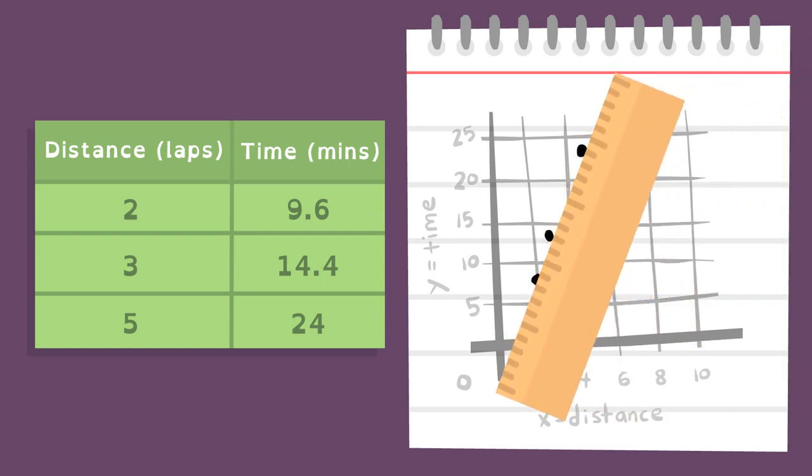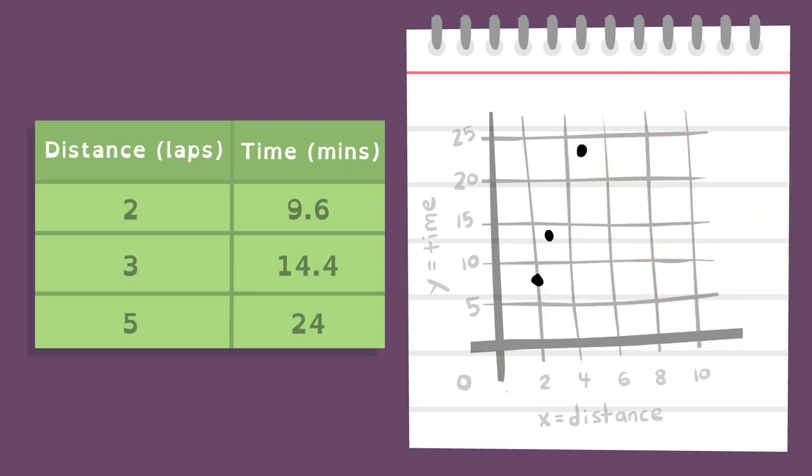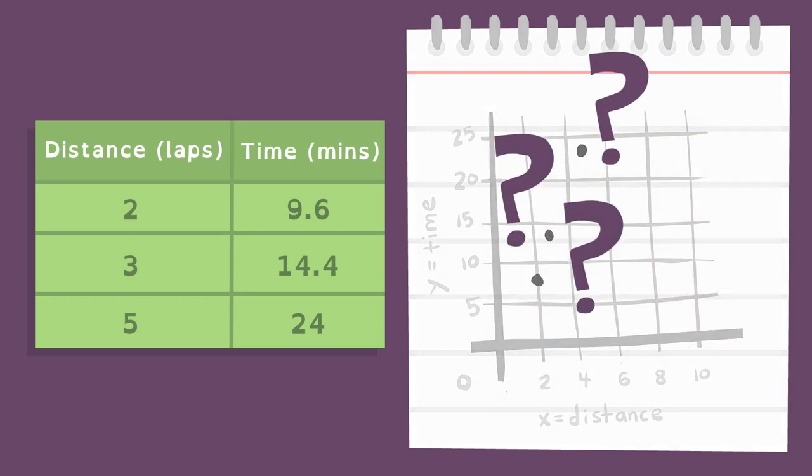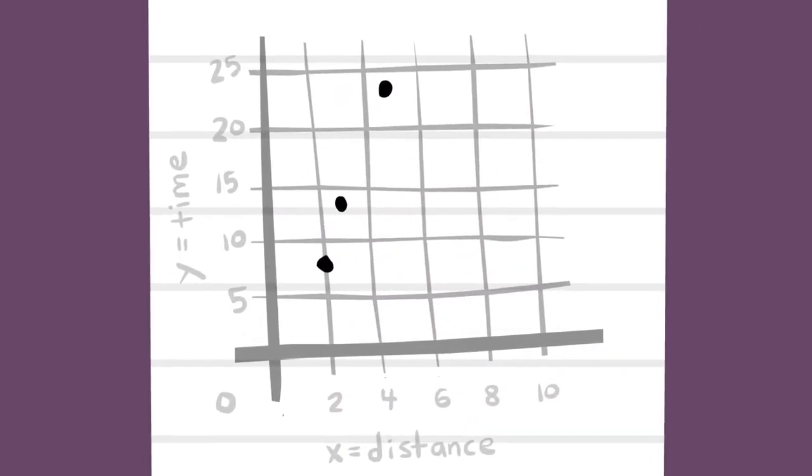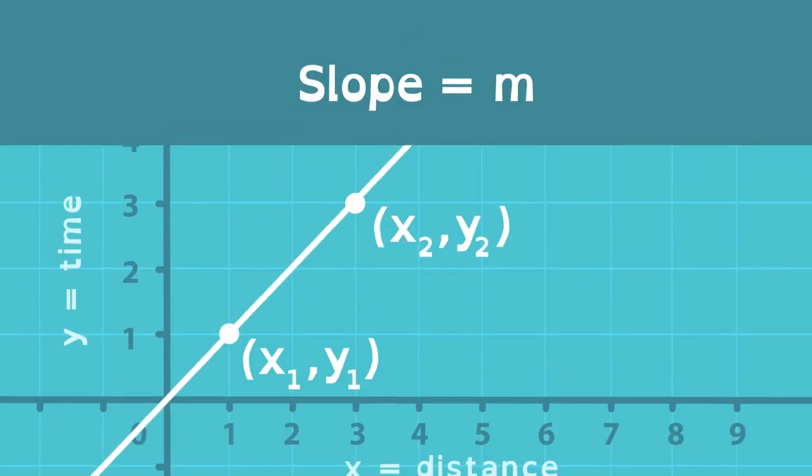Problem is, Jason can't tell if the line is straight and therefore he can't tell if the robot speed is constant based on the rough plotting he's done. Slope can help.